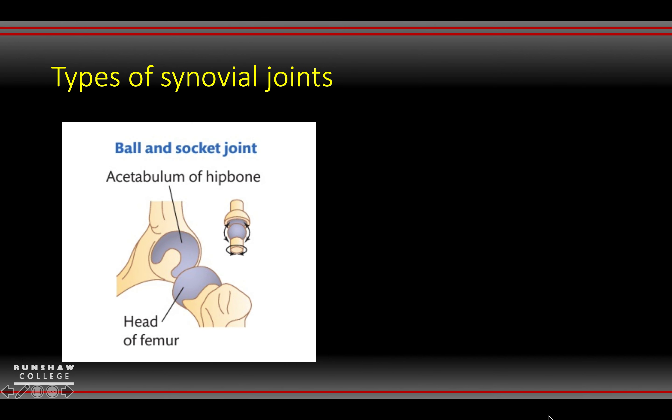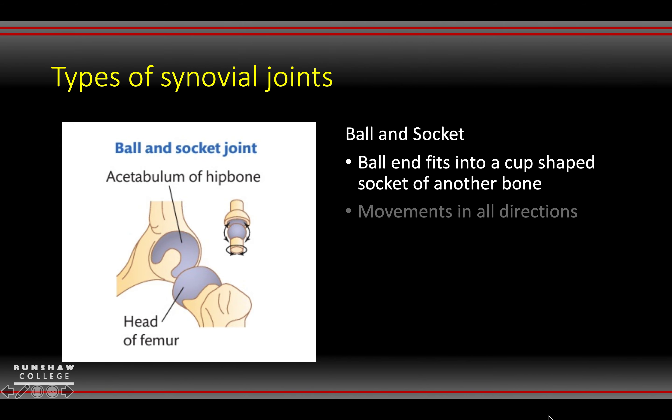Going through the six types of synovial joints — the first one's a ball and socket, which allows complete free movement. You'll find an example of this in your hip and shoulder. It allows movement in all directions: flexion, extension, abduction — you name them, it does them all.